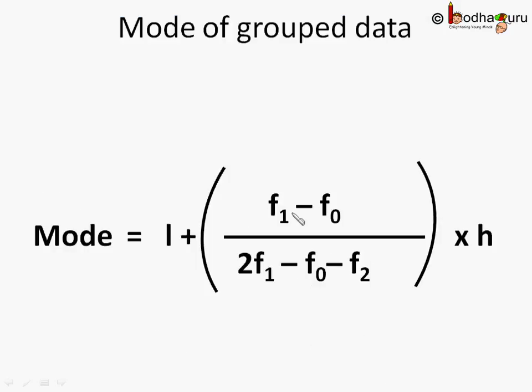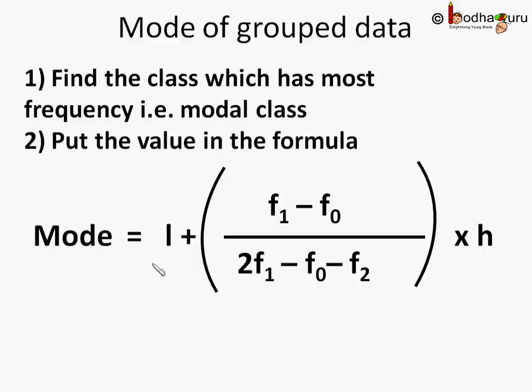To revise, to find mode of a grouped data, first we find the class which has the most frequency. This will be called modal class. Then, we put the values in this formula to actually find the mode value. That is mode equal to L plus F1 minus F0 by 2F1 minus F0 minus F2 into H.